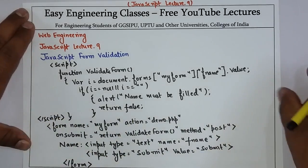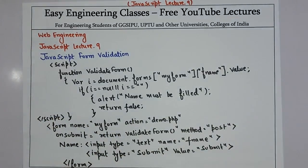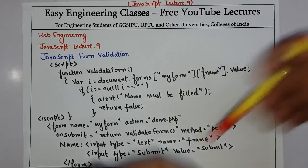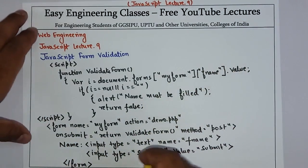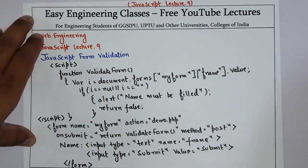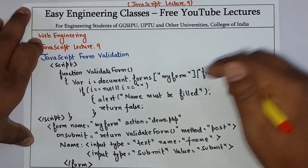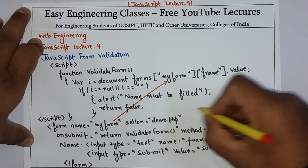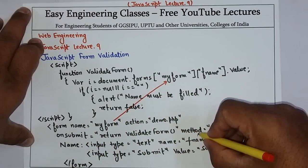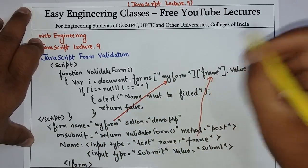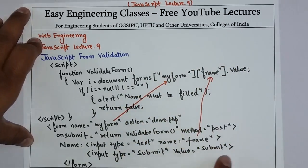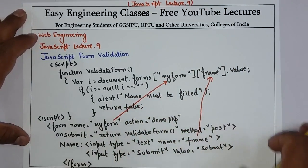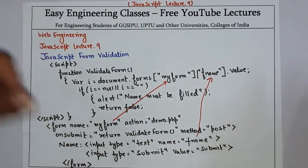So this is how you can do form validation in JavaScript. This is one very basic form validation. In this, what you need to know is you have to access the form name like this and the field name which you want to check like this. So this is the JavaScript form validation example.